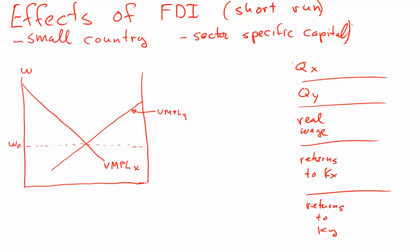That capital is coming in presumably because foreign multinationals believe that they can earn higher returns in this country than they could in other places where they could invest. We have this initial wage W0 — that's the amount that labor earns economy-wide initially — and we have the standard triangles that depict the payments to capital in the two sectors.